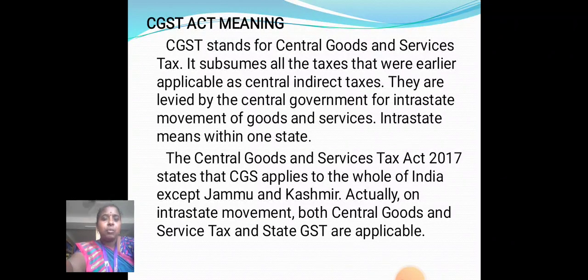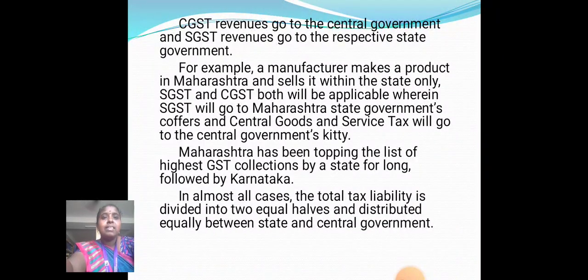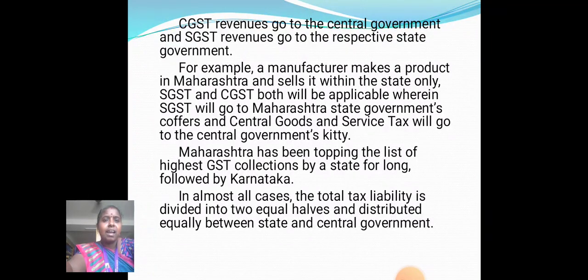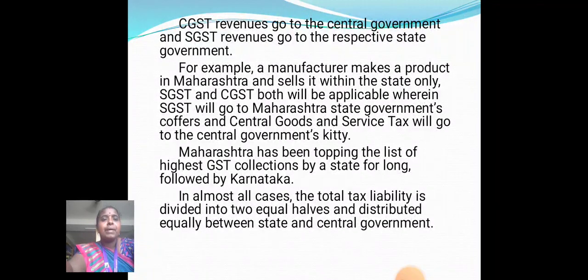In intrastate movement, both Central Goods and Service Tax (CGST) and State GST (SGST) are applicable. For example, a manufacturer makes a product in Maharashtra and sells it within the state only. SGST and CGST both will be applicable, wherein SGST will go to the Maharashtra State Government and CGST will go to the Central Government's kitty. Maharashtra has been topping the list of highest GST collections by state for long, followed by Karnataka.